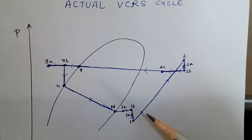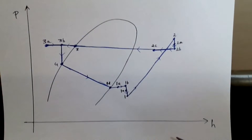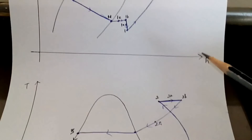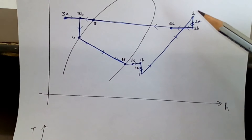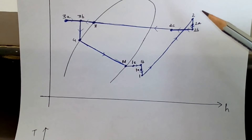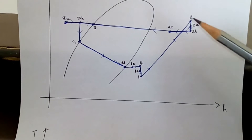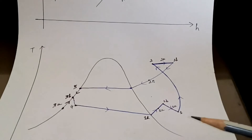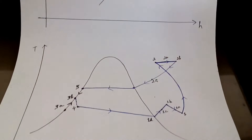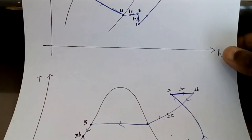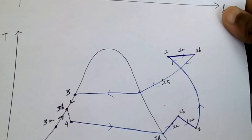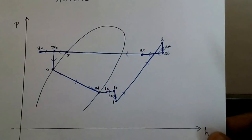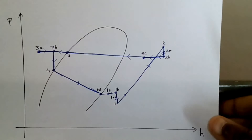So we arrive at point 1. From 1 to 2 there is polytropic compression in the compressor.